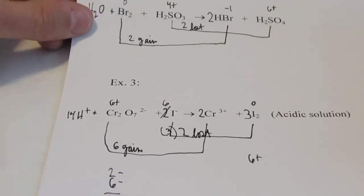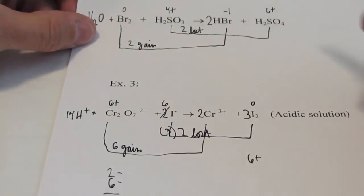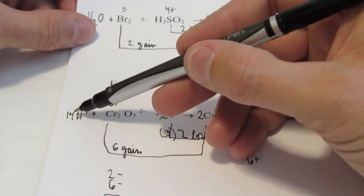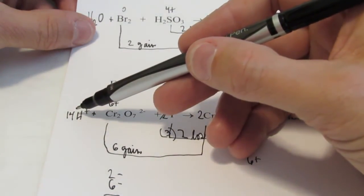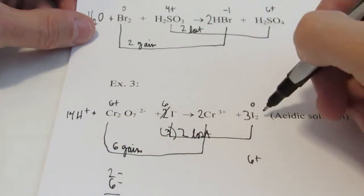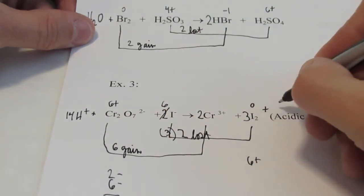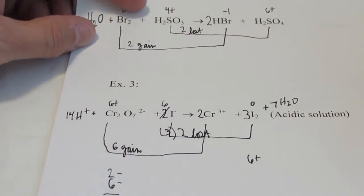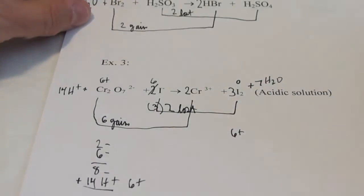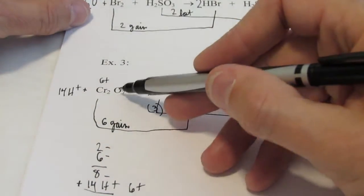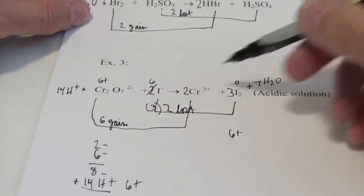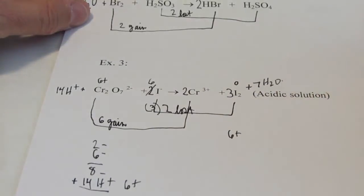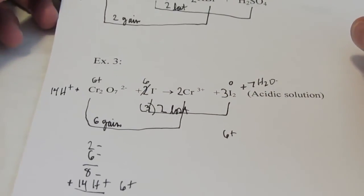I'll write in 14 H⁺ there — now my ionic charge balances. My last step is to balance all hydrogens using water. I have 14 hydrogens on the reactant side and none on the product side, so I add seven waters to my product side. Let's check our oxygens: seven oxygens on the reactant side and seven on the product side. It balances!